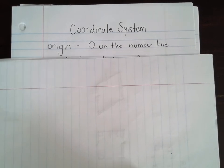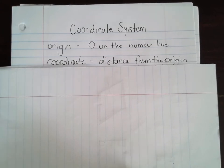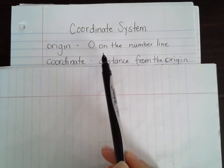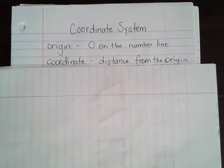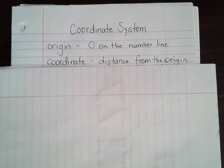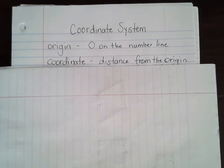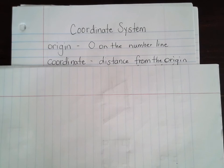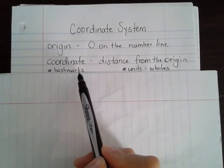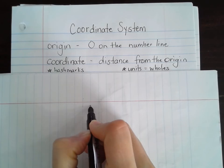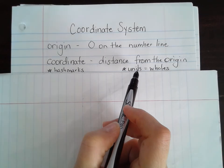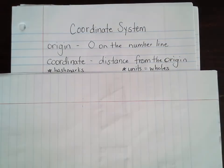The next word I want you to write down is coordinate. A coordinate is the distance from the origin — so the distance from basically zero on the number line. I'll be asking you questions and showing you some examples to find a coordinate for, say, a heart, a picture of a star, or even a point that I put on the number line. Two other vocabulary words: hash marks are just the markings on the number line, and units on the number line means the wholes. So if a number line goes from zero to 12, that would be 12 units.